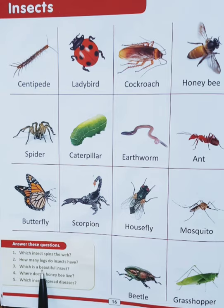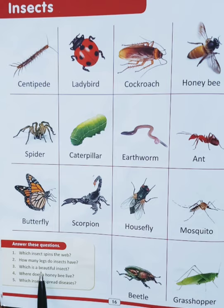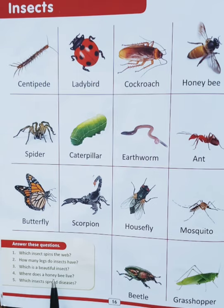The third question is: which is a beautiful insect? The answer is butterfly. The fourth question is: where does a honeybee live? The answer is honeycomb.